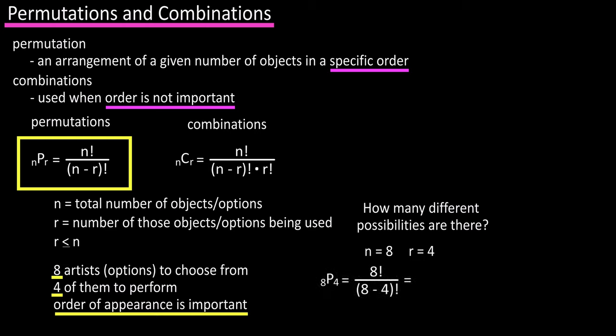So our equation is P(8,4) equals 8 factorial divided by 8 minus 4 factorial, which after canceling out calculates out to 8 times 7 times 6 times 5, which equals 1680 different possibilities.